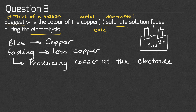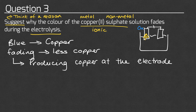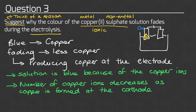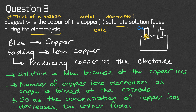Because we're doing electrolysis, the only way we can have less copper in the solution is if we're producing copper metal at the electrode. We can see that copper ions in the solution make the solution blue, and we take those ions out of solution to form copper metal at the electrode. Since we're removing the copper ions from the solution and changing them into copper metal, the solution becomes less blue. So the solution is blue because of the copper ions; the number of copper ions decreases as we form copper at the cathode, the negative electrode, so as the concentration of copper decreases, the colour fades.